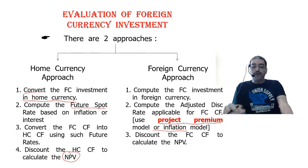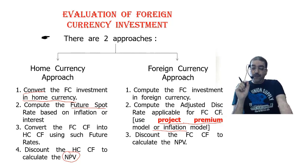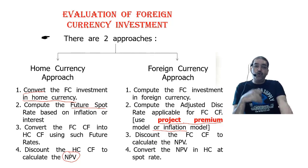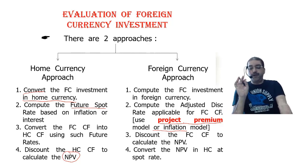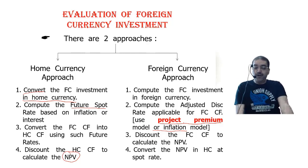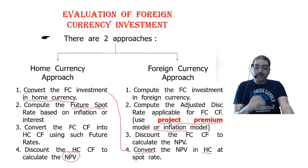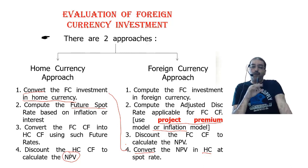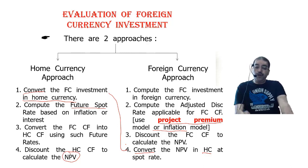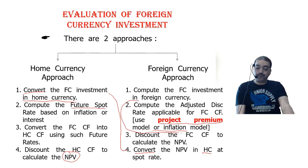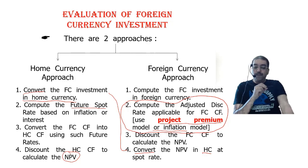After calculating the adjusted discount rate, the third step is to discount all foreign currency cash flows to calculate the NPV in foreign currency. Then in the fourth step, convert that NPV into home currency using the spot rate. Conversion into home currency is the last step here, whereas in the home currency approach it is the first step.